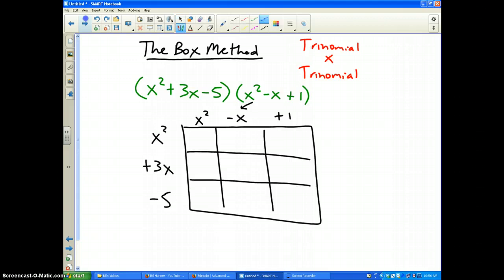Again, if you've written it in standard form, your diagonals will work out as your like terms. Well, the first box should be x⁴ - x³ + x². The second row, 3x times x², would be 3x³. And then 3x times -x would be -3x². And 3x times 1 is +3x. And the bottom row would be -5x², and then -5 times -x is +5x. And then -5 times 1 is -5.